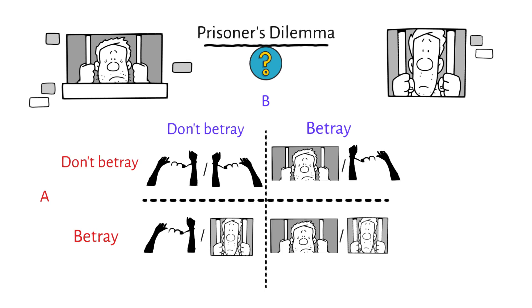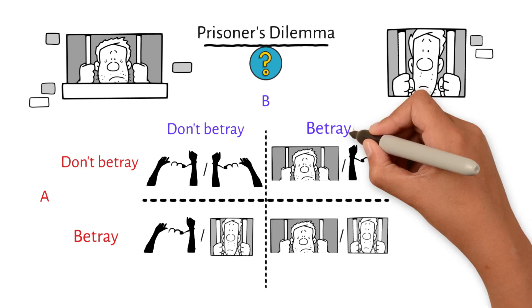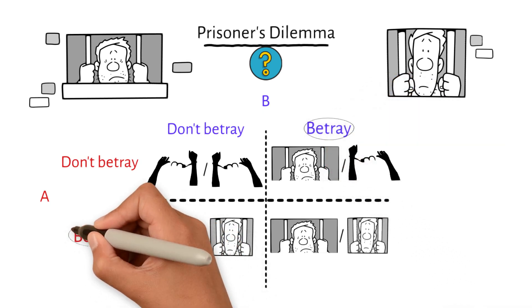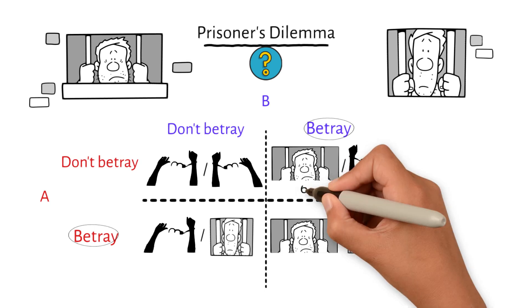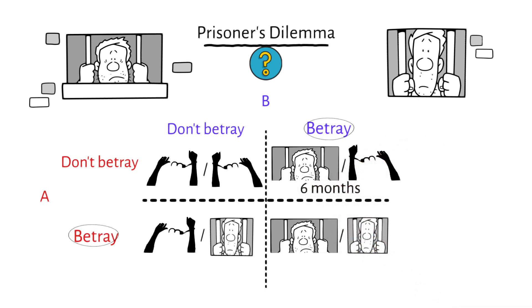If you only care about yourself and don't care about the other prisoner, the easiest way to make sure you don't get a long prison sentence is to betray the other prisoner. No matter what happens, your punishment will be less if you betray than if you don't. If you betray the other person and they don't tell on you, you won't have to serve your six-month sentence. If you betray the other prisoner after he betrays you, you will get two years instead of ten.